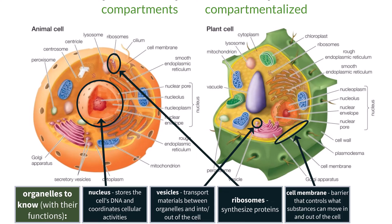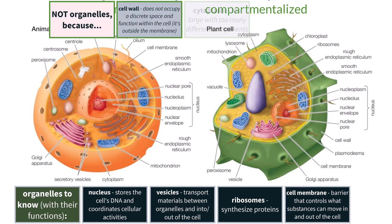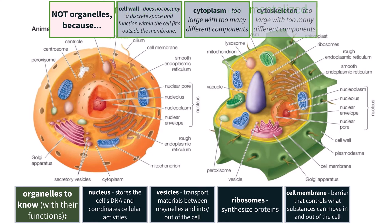There are other components found within and around cells that are not considered organelles, like a plant cell wall, the cytoplasm, and the cytoskeleton. These would not be considered organelles because they do not occupy a discrete space and function within the cell — like the cell wall that sits outside of the cell membrane — or are too large and have too many separate components to be considered discrete enough to classify as an organelle, like the cytoplasm and cytoskeleton.